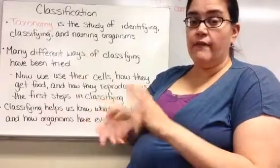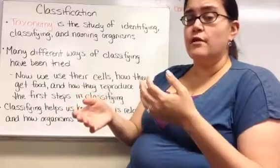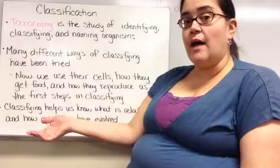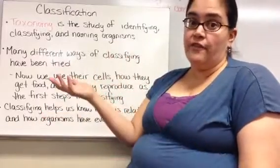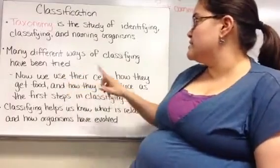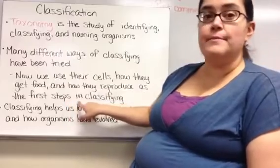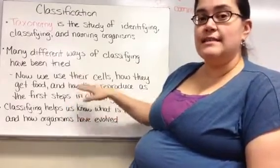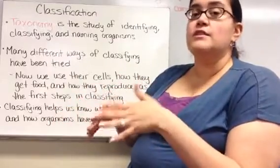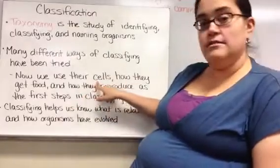Looking at organisms on the surface level doesn't really work. For example, you probably wouldn't think we were related to chimpanzees because we're not covered in fur and we're bigger. So now we use cells, how organisms get food, and how they reproduce as the first steps in classifying — a general basis to get started — and then narrow it down to more specific characteristics.